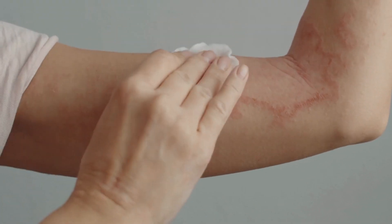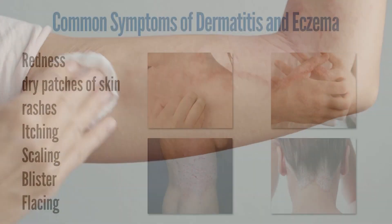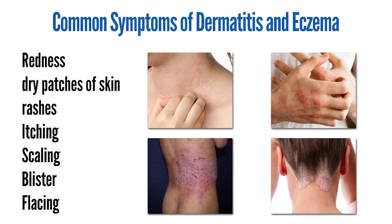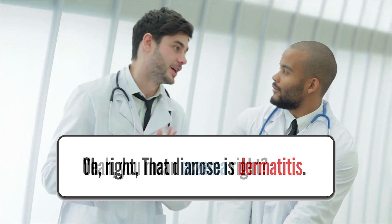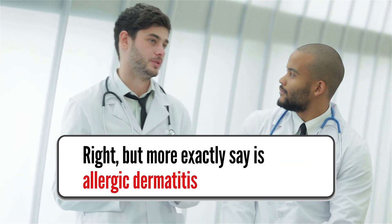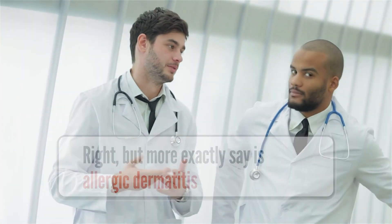Dermatitis and eczema are both generic terms for inflammation of the skin. Both are used to describe a number of types of skin conditions consisting of red, dry patches of skin and rashes. Generally, the words eczema and dermatitis are used interchangeably, although certain conditions are more often referred to as one or the other.